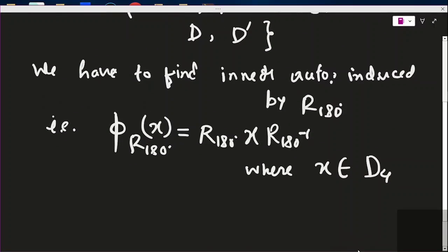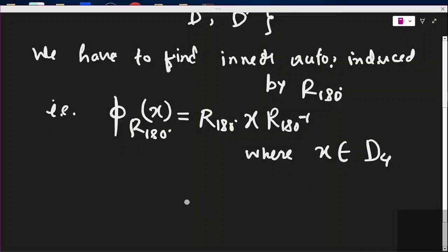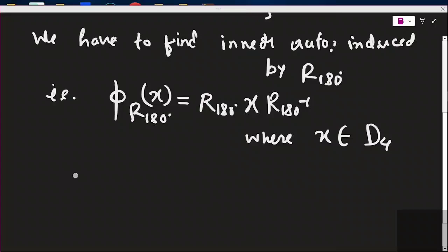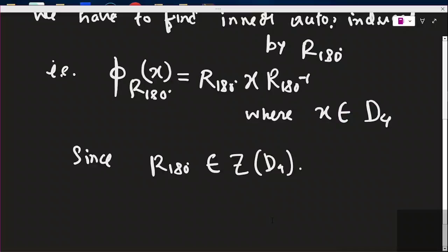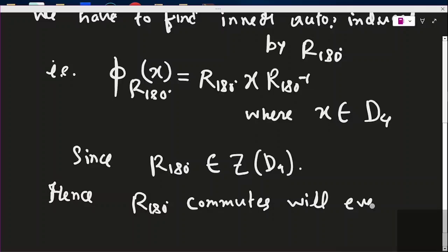Now, r180° belongs to Z(D4), the center of D4. The center is the set of elements that commute with every element of the group. Hence, r180° commutes with every element of D4.